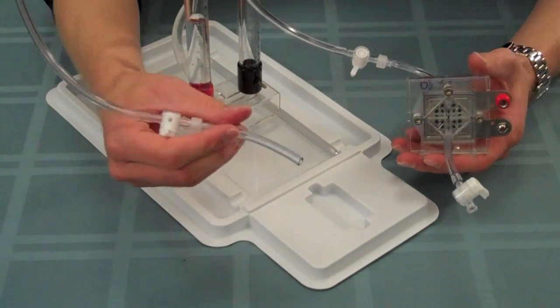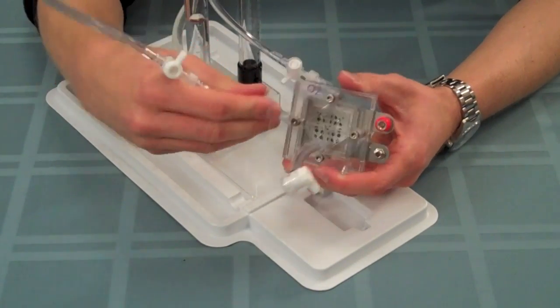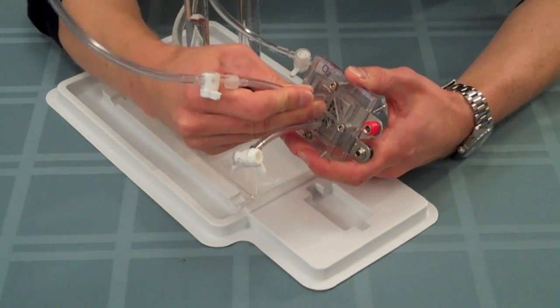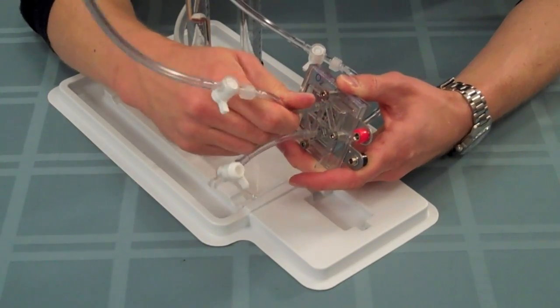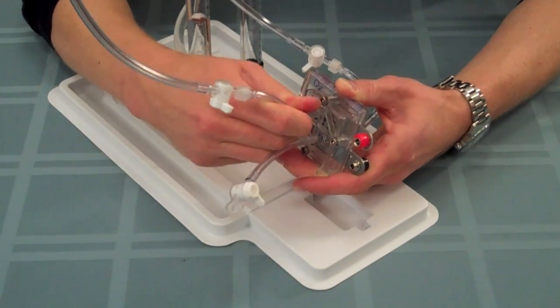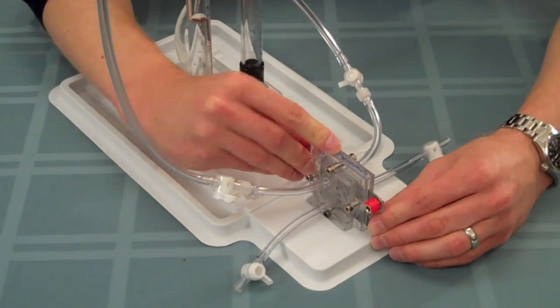Next, take the oxygen gas supply tube and connect it to the side of the fuel cell labeled oxygen. Once all four tubes are connected to the fuel cell, go ahead and insert it into the white plastic tray to keep it snug.